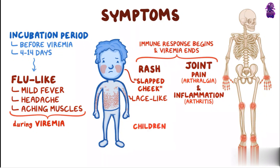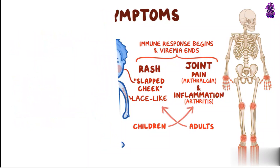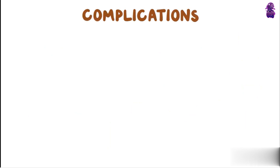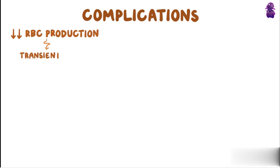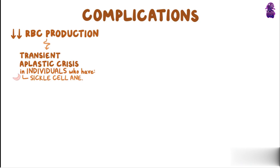Children tend to get the rash, whereas adults are more likely to develop joint pain, but it's not exclusive to either group. The decreased red blood cell production can cause transient aplastic crisis in individuals who have underlying conditions like sickle cell anemia, hereditary spherocytosis, and thalassemia.